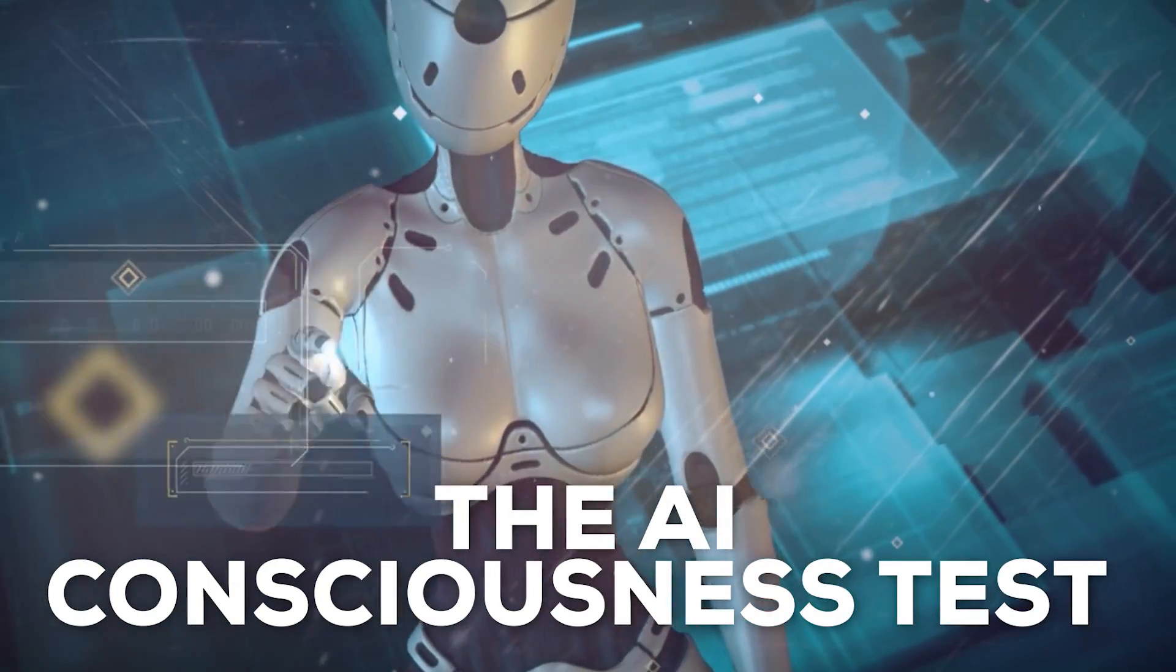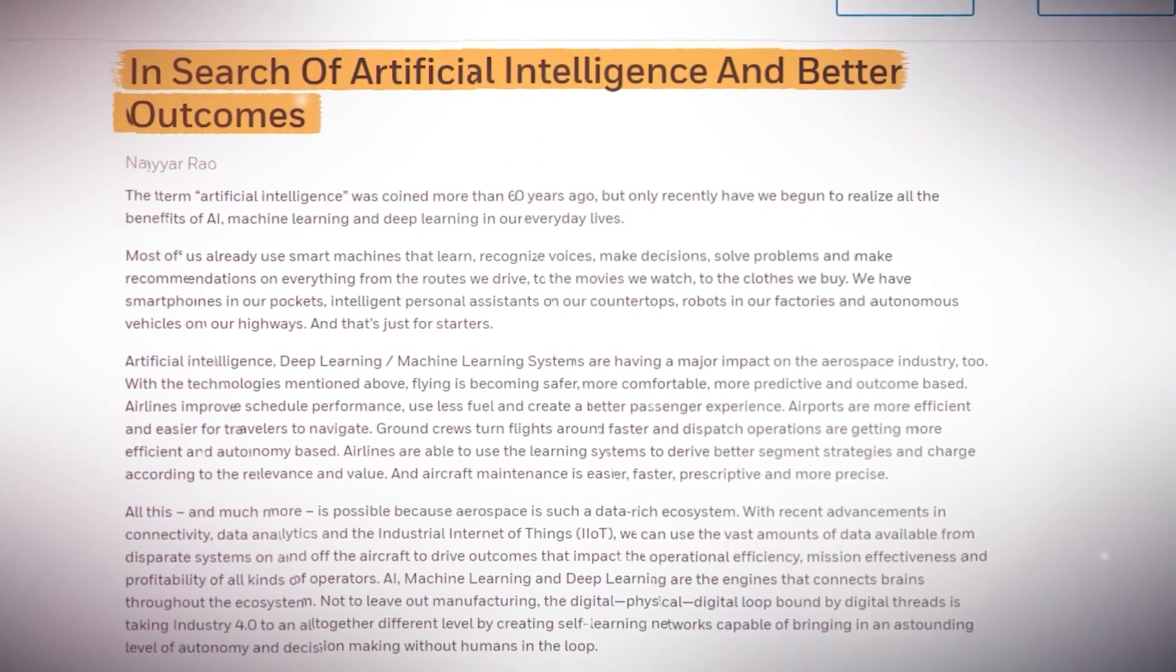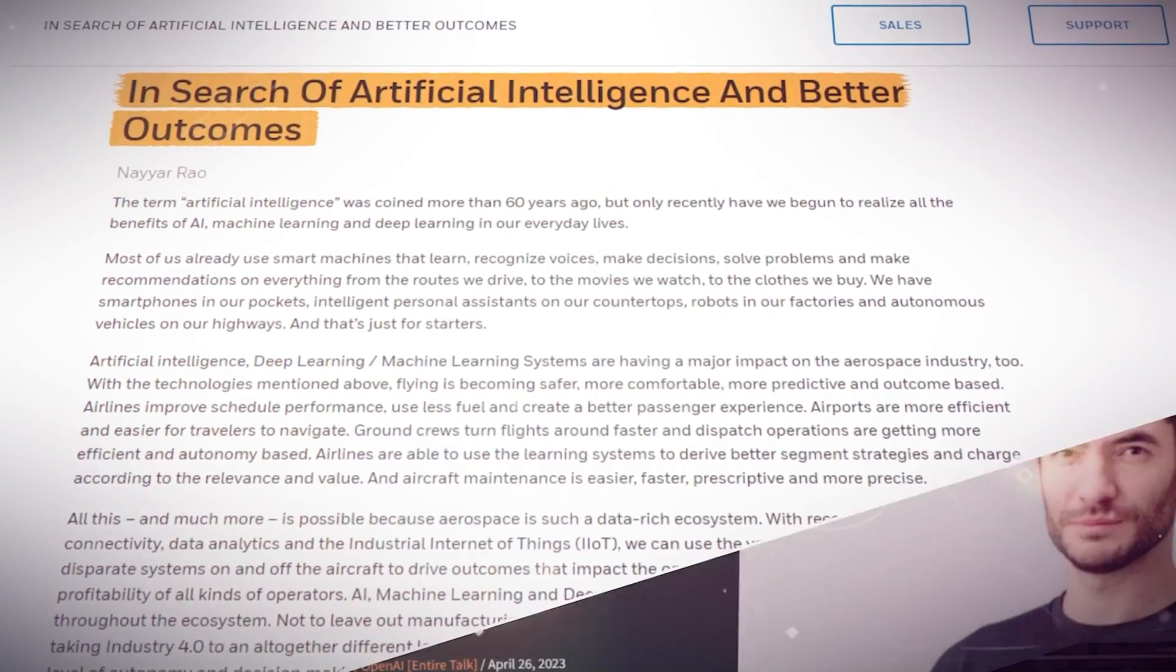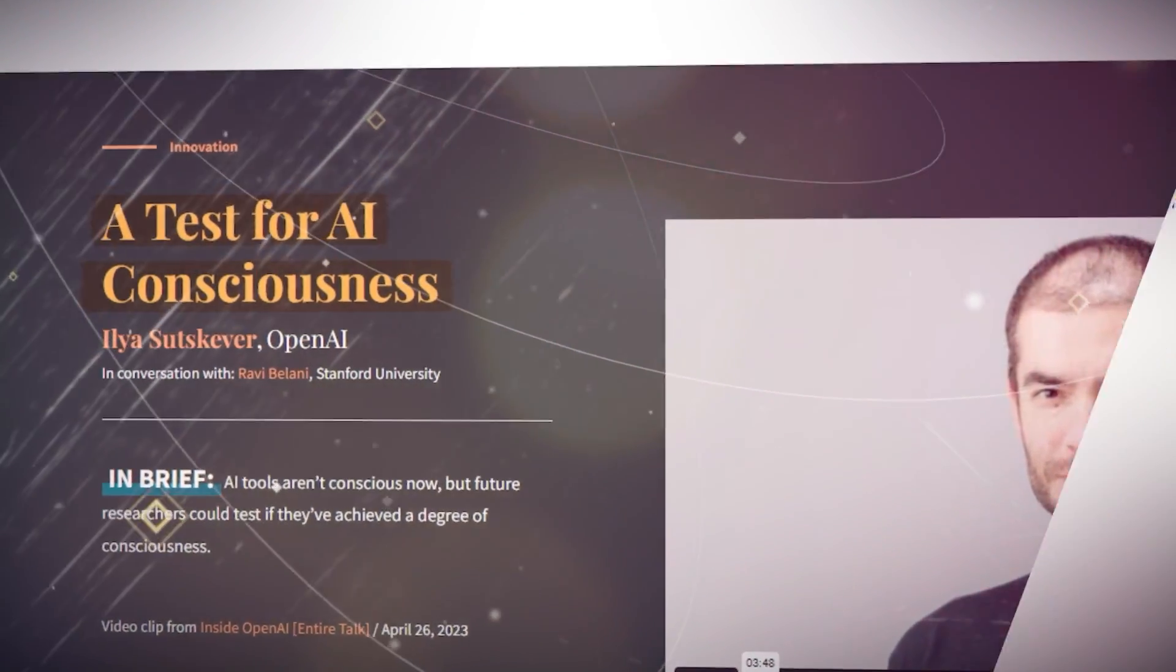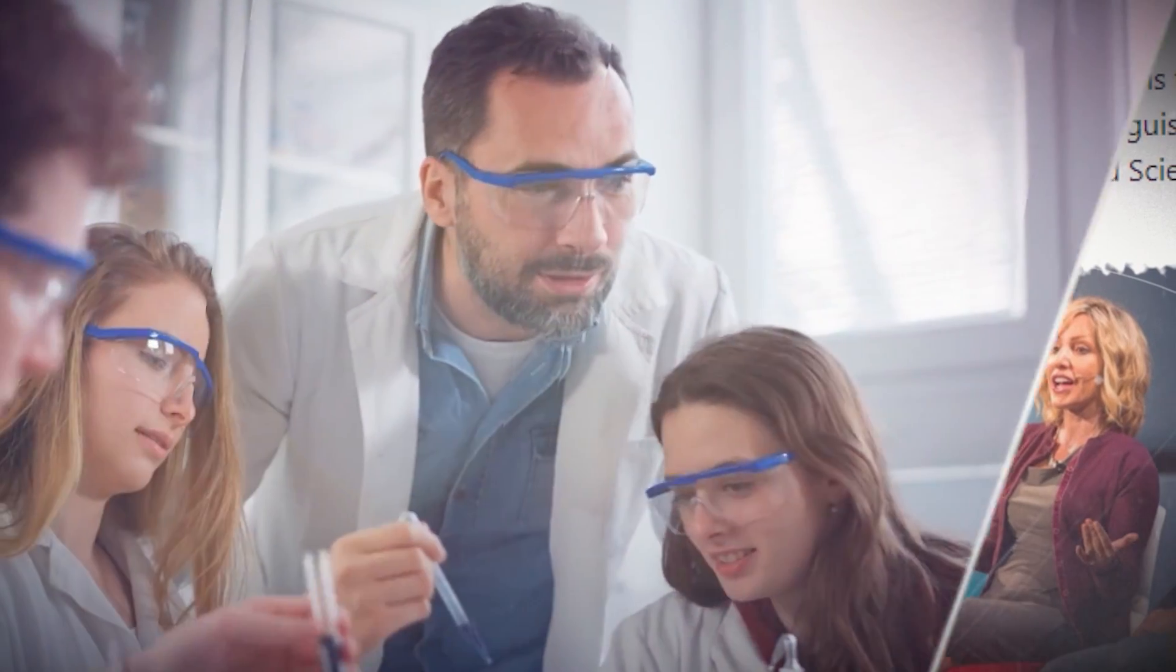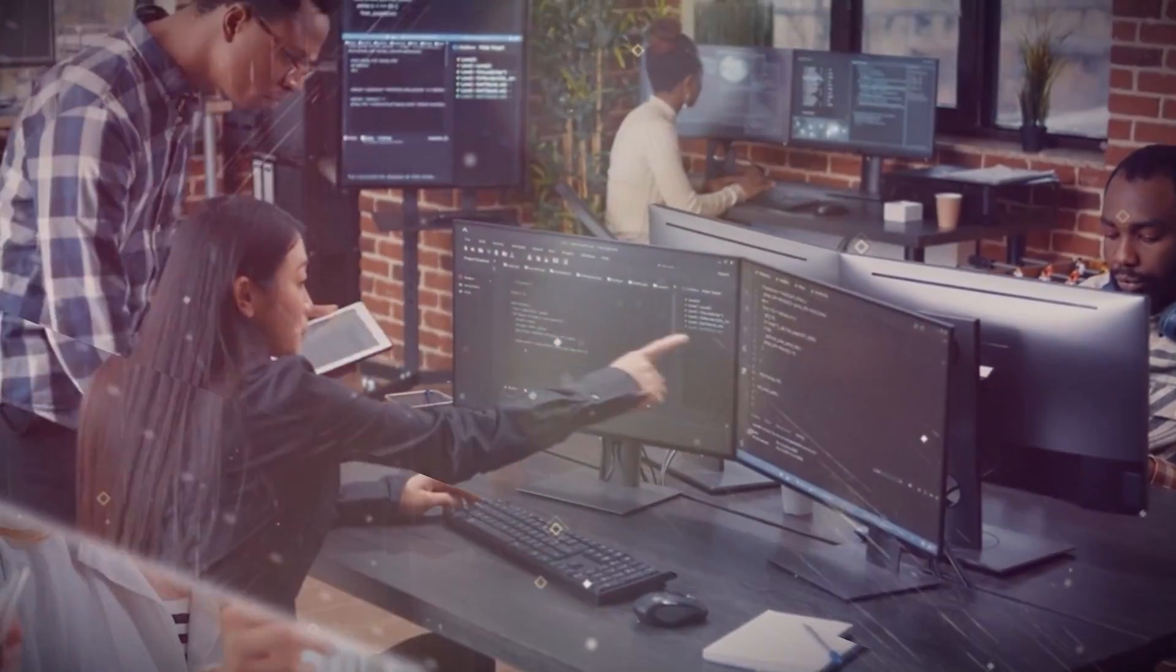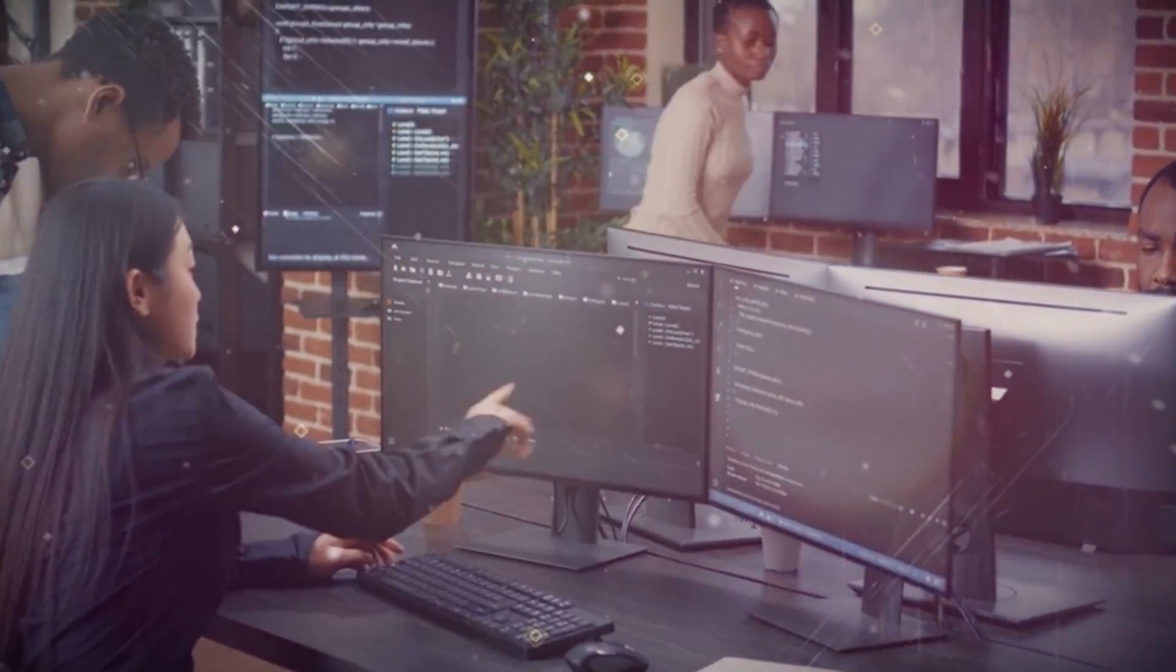Number 2. The AI Consciousness Test. In 2017, a Scientific American article introduced an alternative to the Turing test called the AI Consciousness Test, known as ACT. Professors Susan Schneider, a professor of philosophy and cognitive science at UConn, and Edwin L. Turner, a professor of astrophysical sciences at Princeton, proposed this test.